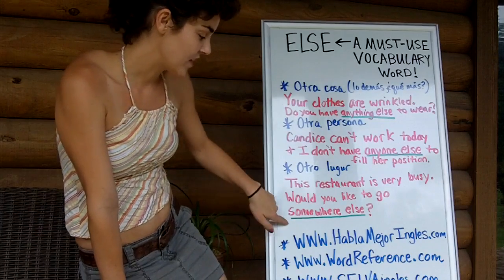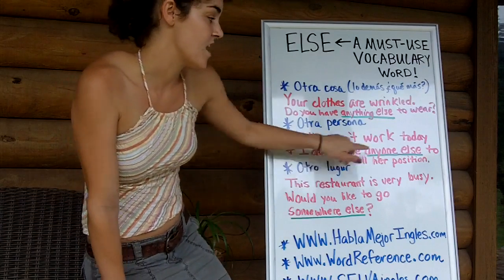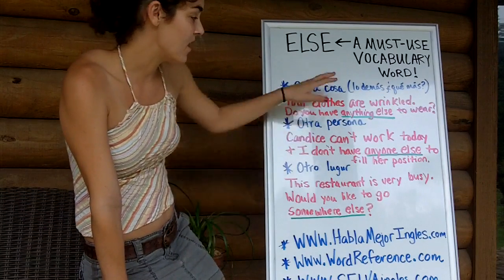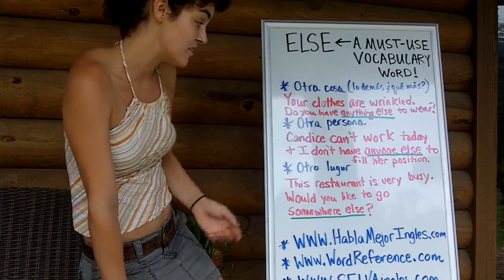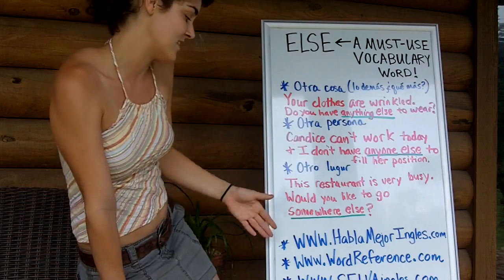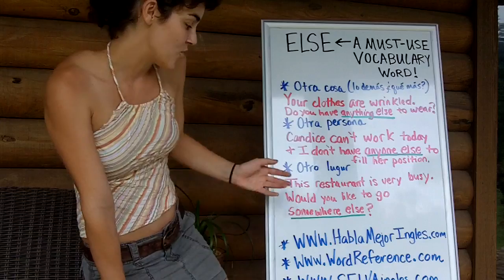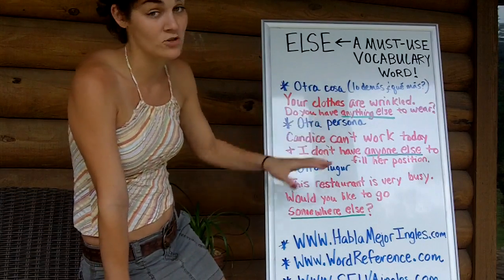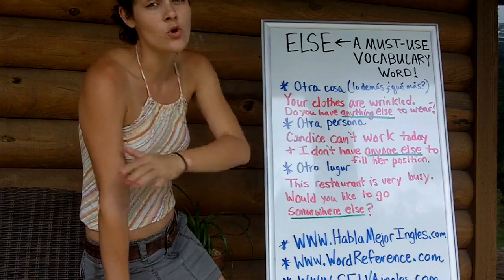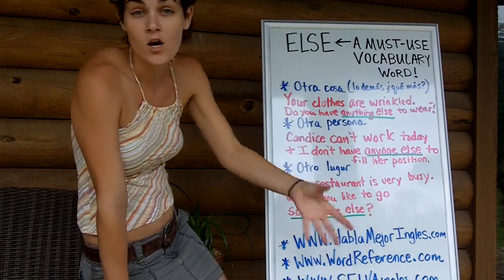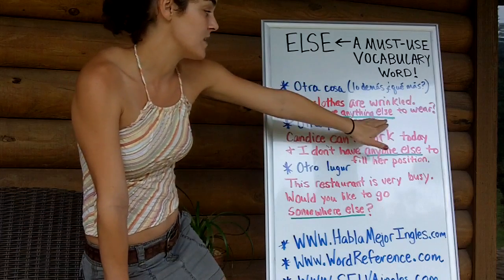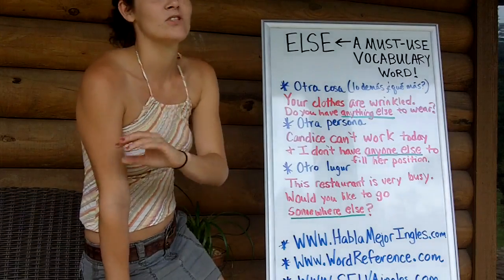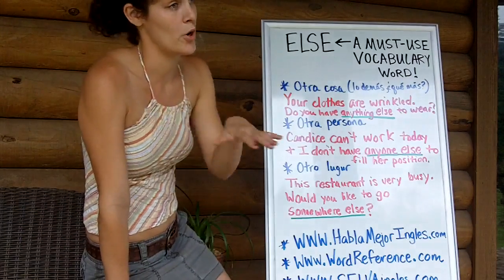Notice — fíjate que tengo somewhere else, anyone else, anything else. Es porque ELSE generalmente va con esas palabras: anything, nobody, anyone, anything, somewhere, nowhere, anywhere. Todas esas palabras generalmente — no siempre — pero realmente usamos ELSE y no usamos MORE. Y si pongo MORE en vez de ELSE en estas oraciones, sí te van a entender, pero no se oye natural y tampoco creo que es correcto.